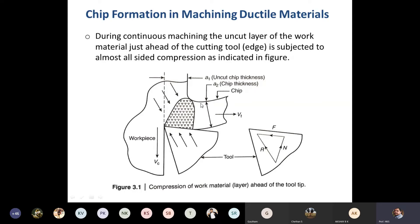During continuous machining, the uncut layer of the work material — noted by this portion in the figure — is just ahead of the cutting tool. This is the cutting tool, and this is the chip material removed in the form of chips. Here you can see the compressive forces, and this force is applied by the cutting tool. This is the resultant force of the cutting tool.